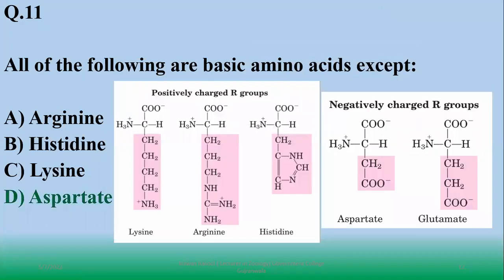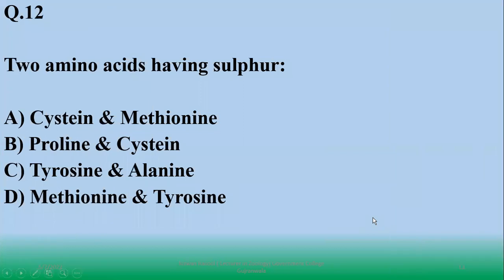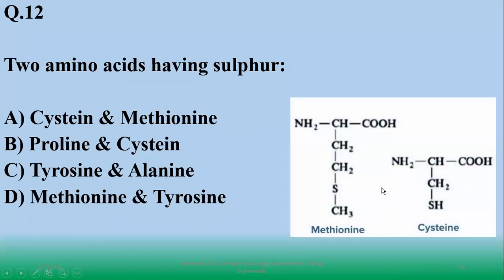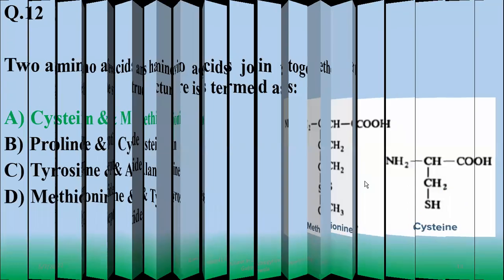Number 12: two amino acids having sulfur - there are only cysteine and methionine. Cysteine ka jo sulfur hai sirf yehi disulfide linkages mein participate kar sakta hai. Methionine mein sulfur to hai lekin yeh kahin bhi disulfide linkage mein nazar nahi aayega. So right option is A.